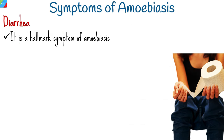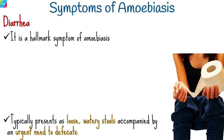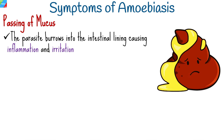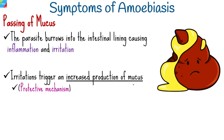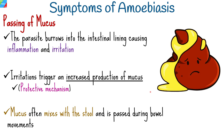Diarrhea is a hallmark symptom of amoebiasis. It typically presents as loose, watery stools that may be frequent and accompanied by an urgent need to defecate. The diarrhea can range from mild to severe. As the parasite burrows into the intestinal lining, it can cause inflammation and irritation, triggering increased production of mucus by the intestinal cells as a protective response. This mucus often mixes with the stool and is passed during bowel movements.